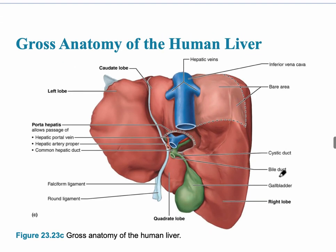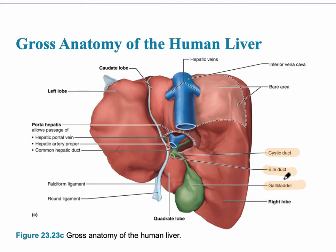The gross anatomy of the human liver is shown on this slide, and we're looking at a posterior view. On the right-hand side we can see the cystic duct, which drains the gallbladder. It combines with the bile duct, and the common hepatic duct is formed at the junction where the cystic duct drains into the bile duct.